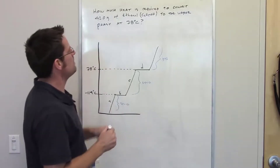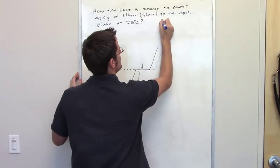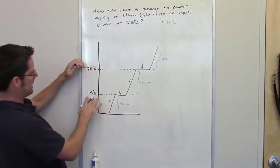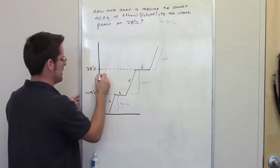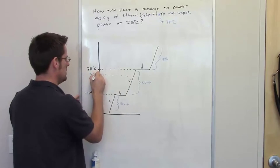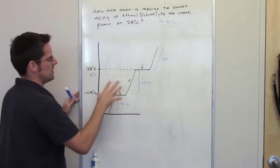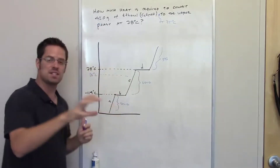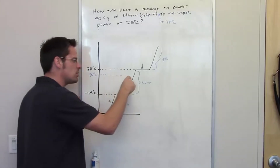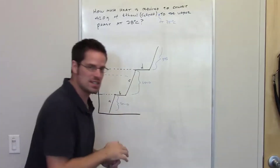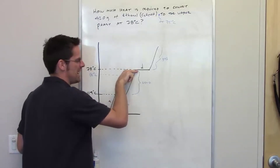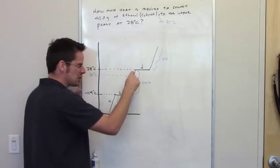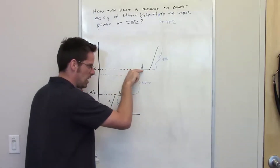This question asks us how much heat is required to convert 42 grams of ethanol at 35 degrees Celsius to the vapor phase at 78 degrees Celsius. Somewhere between negative 114°C and 78°C is 35°C, so ethanol is going to be a liquid there. To convert 42 grams to the vapor phase, I have to warm it up from 35 to 78 degrees Celsius, and then convert all of it from liquid to gas — going up the slope to 78, then across plateau D.